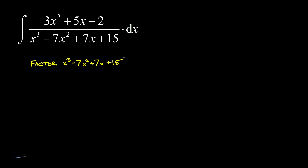There's no obvious way to factor this thing by grouping, so our next best method is root guessing. What we're trying to do is guess a root of this polynomial — in other words, a value of x that makes it equal to zero — and we know from the factor theorem that every root corresponds to a factor.